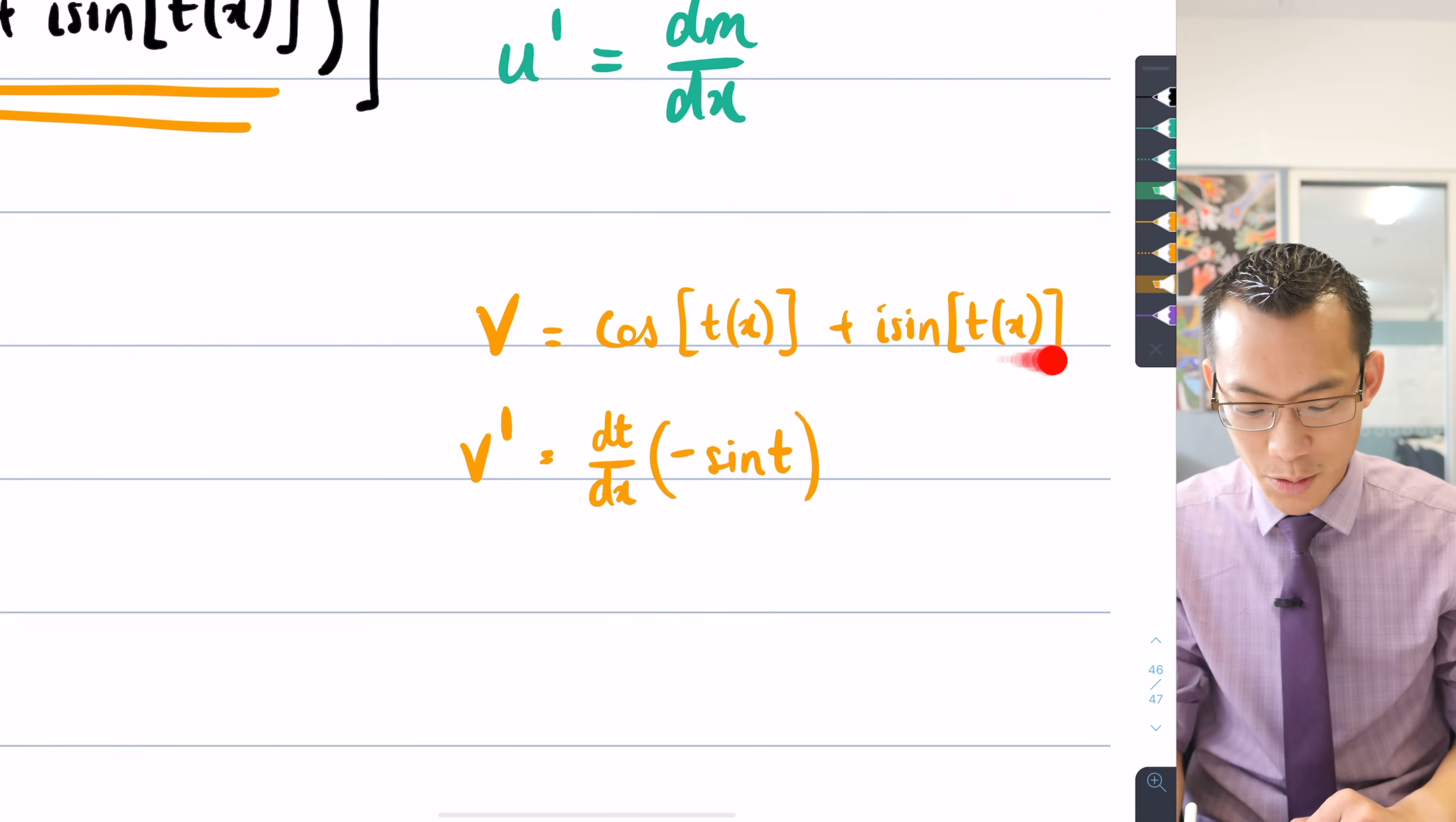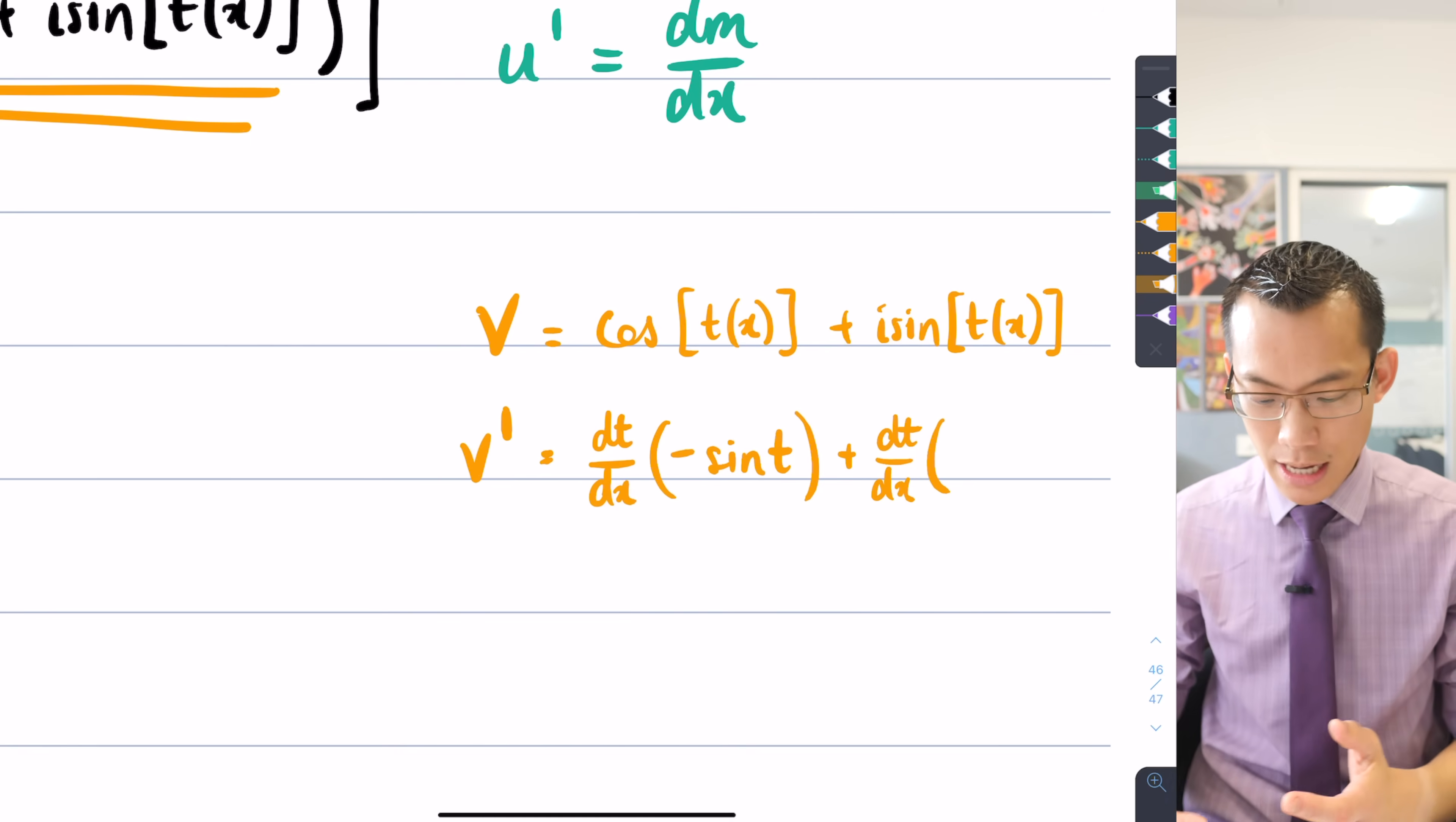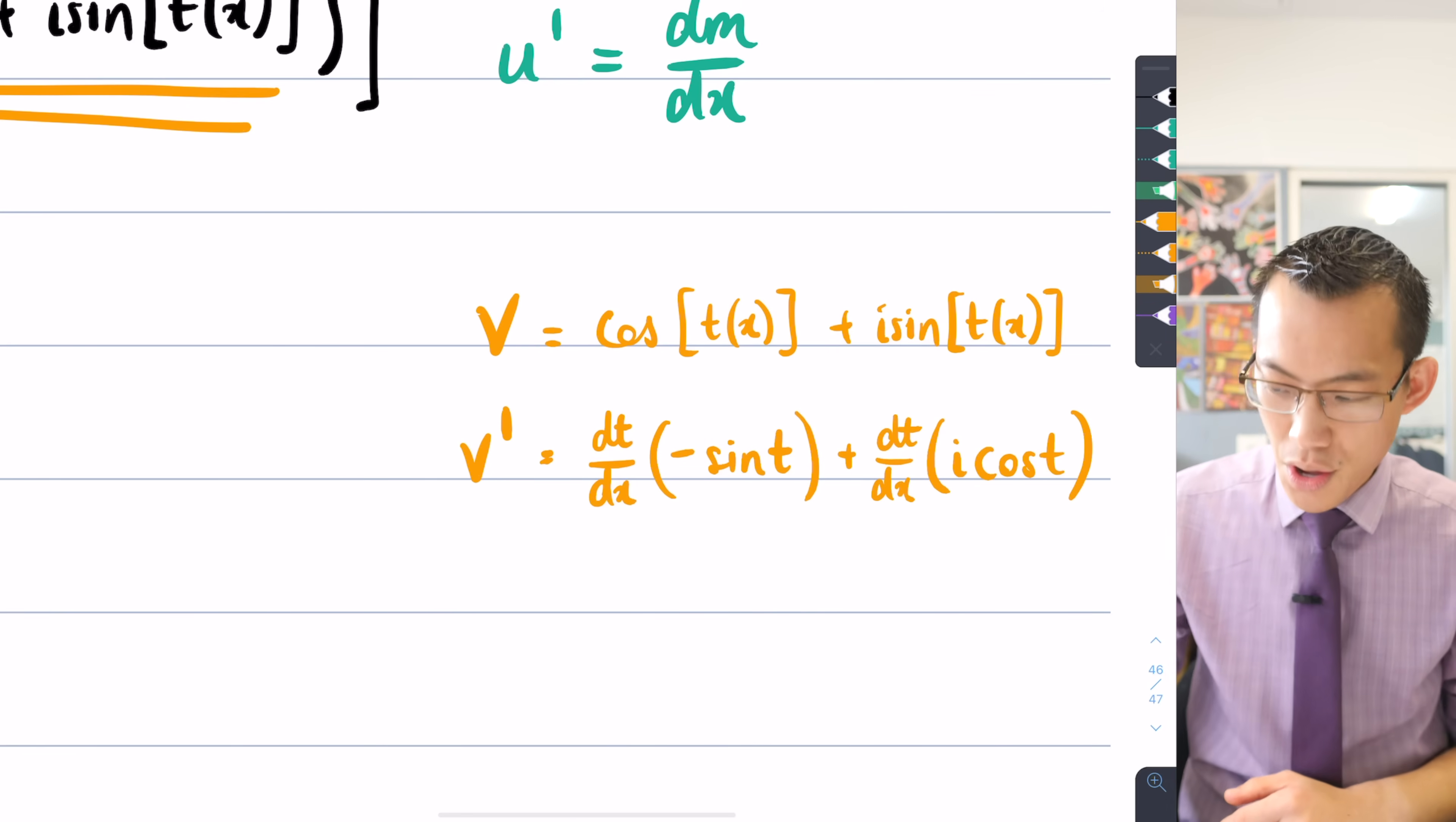But now I need to deal with this part as well. So I'm going to deal with the derivative of the inside and the outside. The derivative of the inside, well, it's t of x is the inside function again, so I'm going to get dt/dx. Then what happens on the inside, well, I've got an i, which is just a constant, so it's going to hang out the front there, i. And then sine of something is going to become cos of something, so I end up with cos of t.